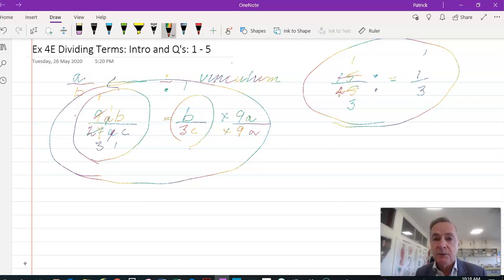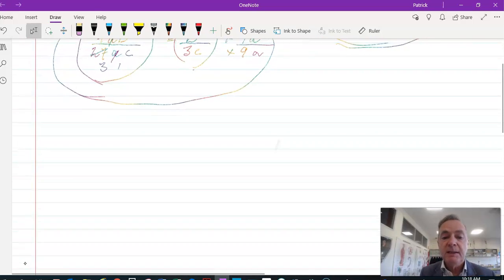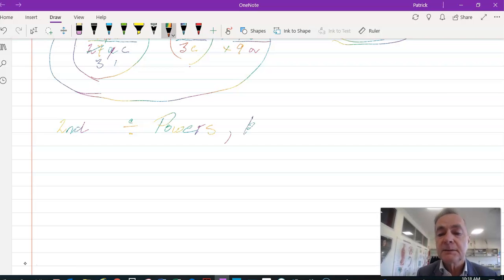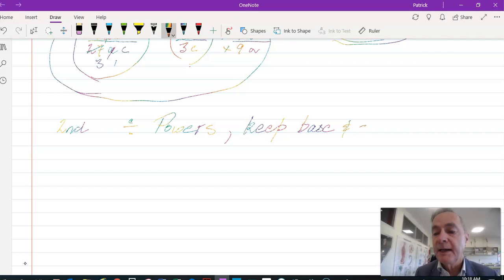Remember, the second index law: when you divide powers, you actually subtract. You keep the base and subtract the powers. Keep the base and subtract the powers, because it's the inverse of multiplying that we did in 4d.